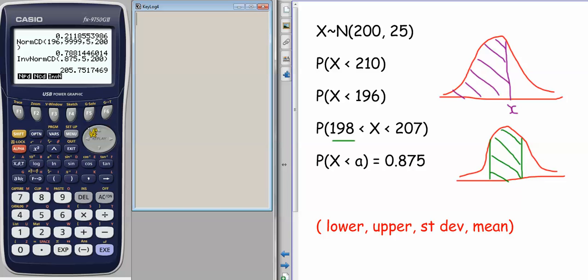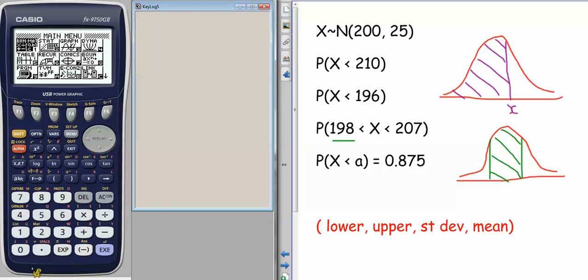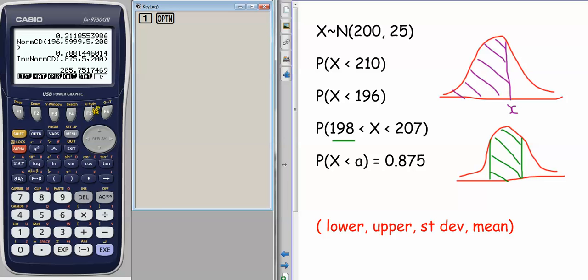So a quick recap from the start. From the menu, we choose 1 for the main menu, we then go for options, stat, dist, norm, and then ncd for finding probability, inverse for finding a value. And the key thing is, these are the parameters that go in. So lower, then upper, and always standard deviation before the mean.